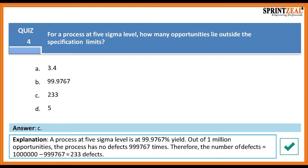The answer is C. A process at five-sigma level is 99.9767% yield. Out of one million opportunities, the process has no defects 99.9767 times.